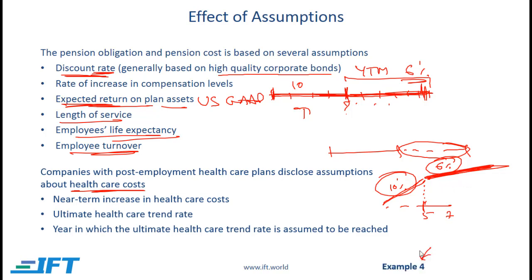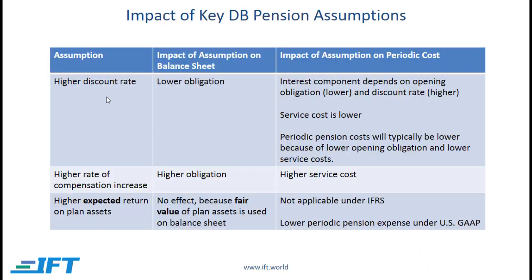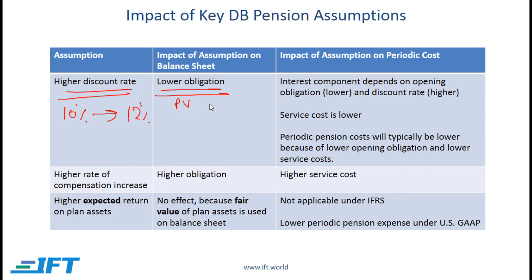Now let's look at Example 4 from the curriculum, examining the impact of the three most testable assumptions. If we initially used a discount rate of 10% and then increased it to 12%, that will reduce the obligation. The funded status is calculated based on the present value of the pension obligation and the fair value of plan assets. When the discount rate goes up, the present value of the pension obligation goes down while the fair value of plan assets is not impacted — so a higher discount rate lowers the overall obligation.